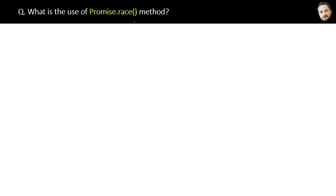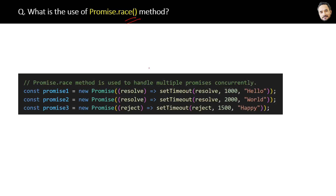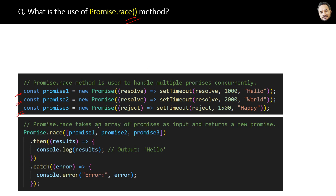What is the use of Promise.race? It is very similar to Promise.all, with just one difference. Here is the code where we have multiple promises, and here is the code where we are calling the Promise.race function, taking all the promises as an array parameter input.